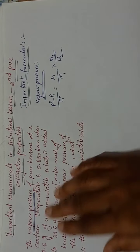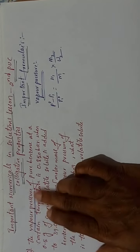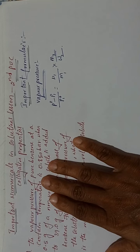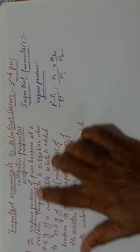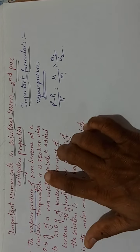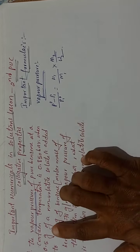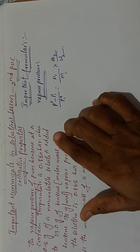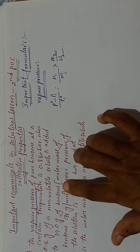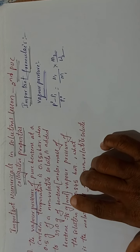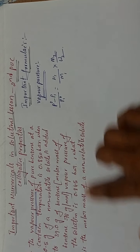Now let's look at this first problem — it is a vapor pressure problem. The vapor pressure of pure benzene at a certain temperature is given. When 0.5 grams of a non-volatile solute is added to 39 grams of benzene, the molar mass of benzene is also given, and the vapor pressure of the solution is given.